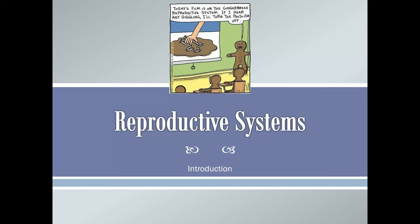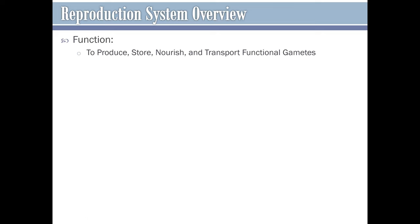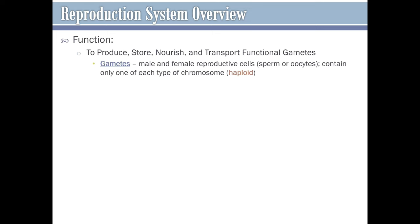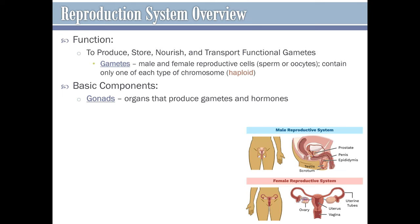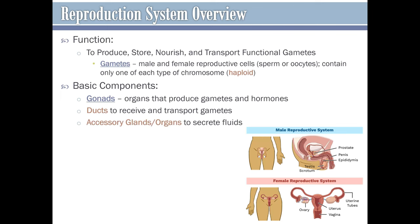Now we can look at the reproductive systems, starting with an introduction and overview. The function of the reproductive systems is to produce, store, nourish, and transport functional gametes. The gametes are the male and female reproductive cells — sperm in males and oocytes in females — and they contain only one of each type of chromosome, so these are haploid cells formed by meiosis. The basic components include gonads, which produce gametes and hormones (testes in males, ovaries in females), ducts to receive and transport gametes, accessory glands that secrete fluids, and external genitalia.